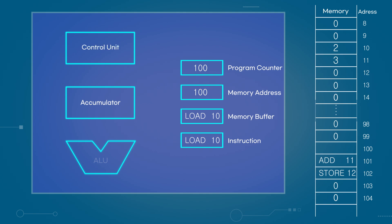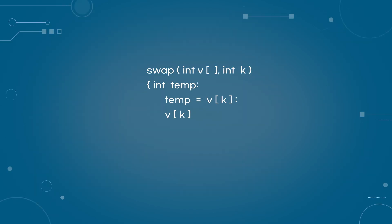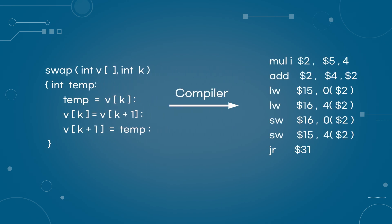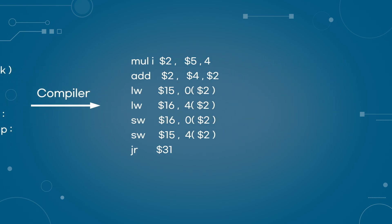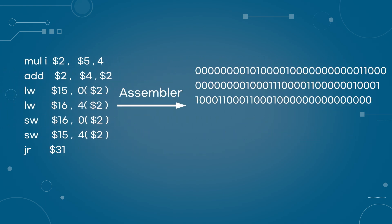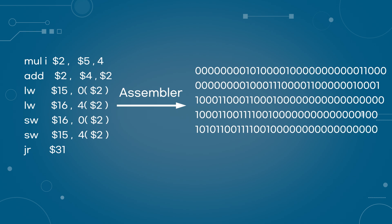There is also the control unit, which interprets the instructions stored in the instruction register and directs the system components to execute the interpreted commands. The ALU executes arithmetic and logic operations. The programs we use are coded in high-level programming languages such as C. These coded languages are converted into assembly language by a compiler so that the CPU can execute them. The assembly language must then be converted into machine code, composed of zeros and ones, by an assembler according to predefined rules.